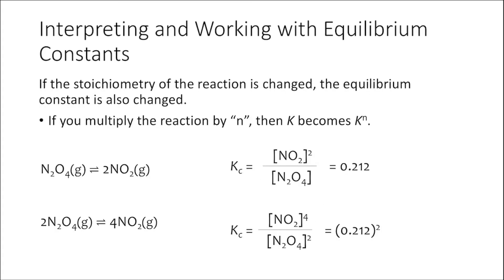There's more. If the stoichiometry of the reaction is changed, the equilibrium constant is also changed. Remember that equilibrium constants are specific to a particular chemical reaction as written and at a defined temperature. So if we take a chemical reaction and multiply the entire thing through by 2, notice how that changes the coefficients in the balanced chemical equation, and look at how that plays out in writing our equilibrium constant.